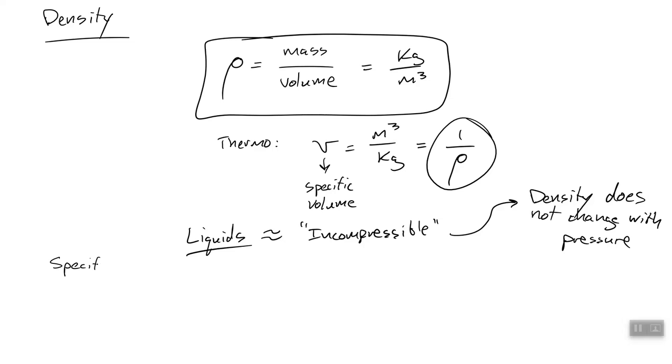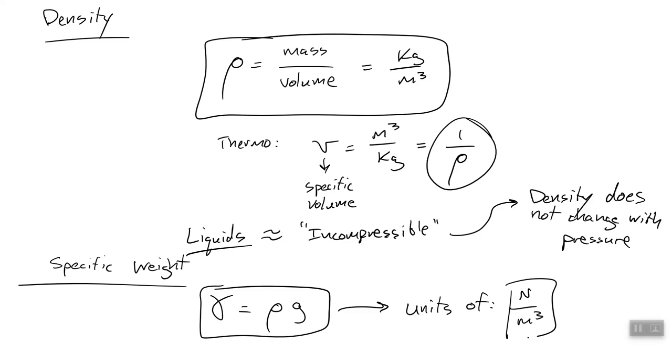Another very much related unit is the specific weight, which we'll call lambda. And that's just equal to the density times the gravitational constant, which means it has units of newtons per meter cubed. Specific weight is especially useful for statics problems, so next week we'll use specific weight, which is why I'm introducing it now.